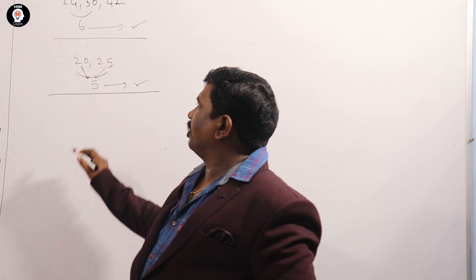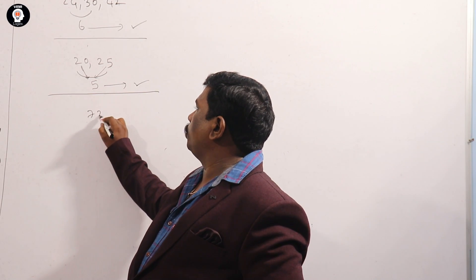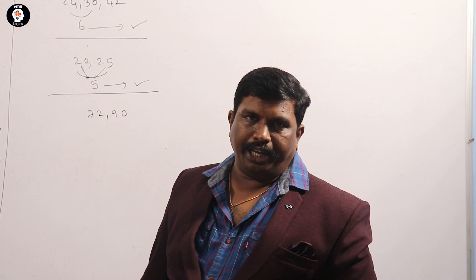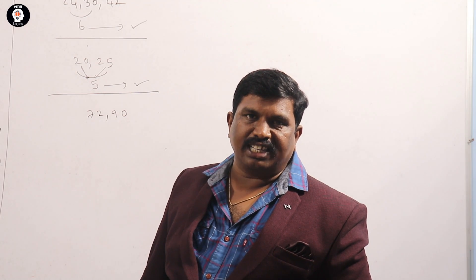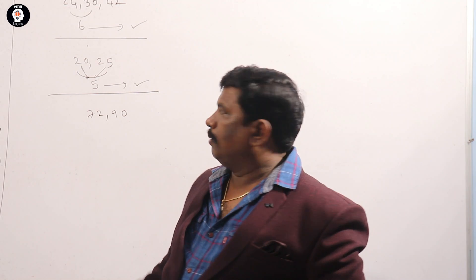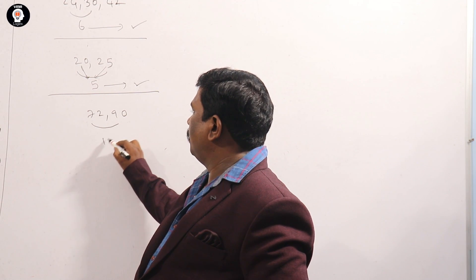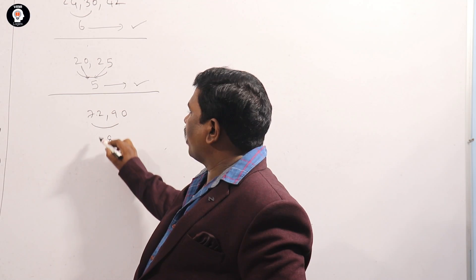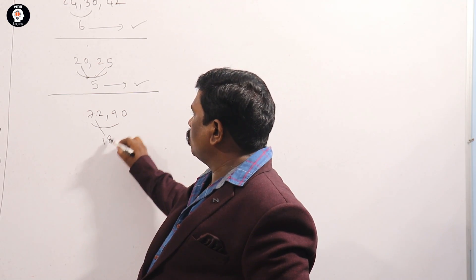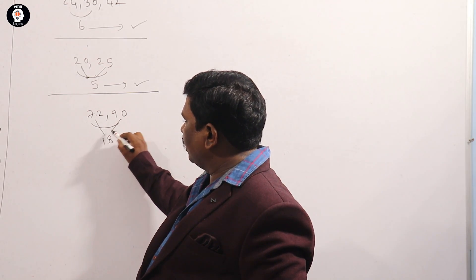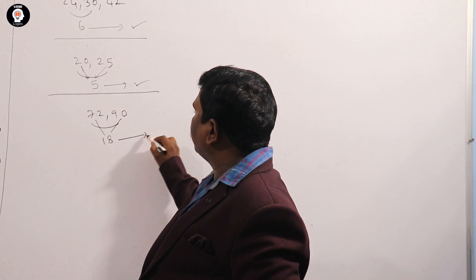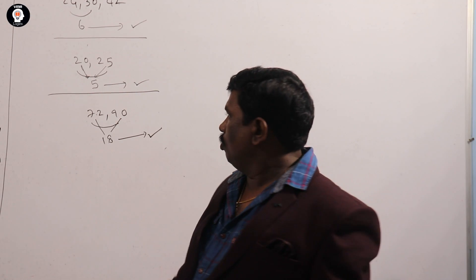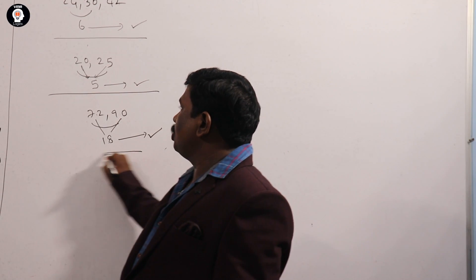Next, one more example: 70 and 90. GCD is a factor. Minimum difference is a factor — 10 is the minimum difference. Is 10 a factor? Yes. Is 10 a factor? Yes. That is GCD.